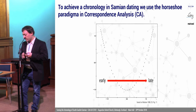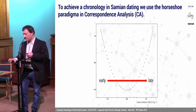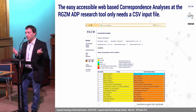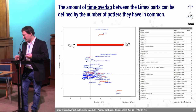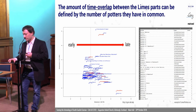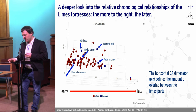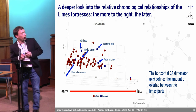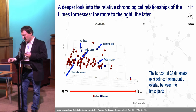To achieve a chronology in Samian dating, we use the so-called Horseshoe paradigm and correspondence analysis as a starting point for our software. You can do the CA in any tool you like, such as R or the ADP from the ACSM which is based on R. We decided that the amount of time overlap between the limes parts can be defined by the number of potters they have in common, as you can see on the slide. The horizontal CA dimension axis defines the amount of overlap between the limes parts.